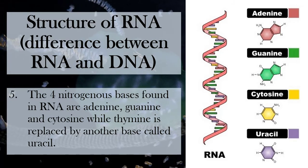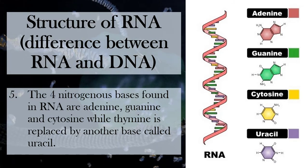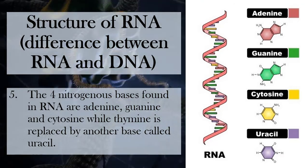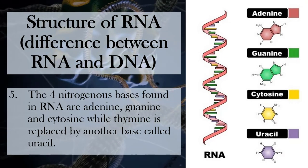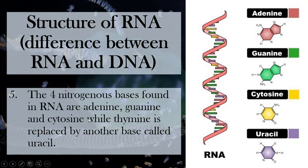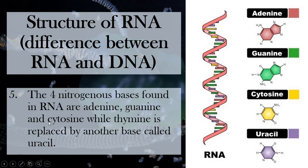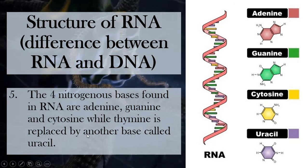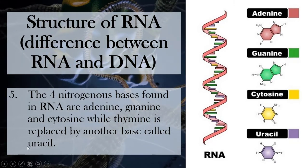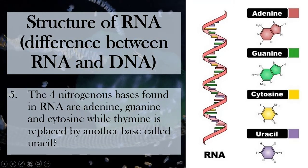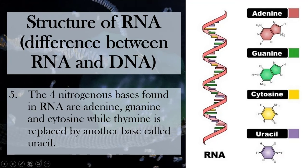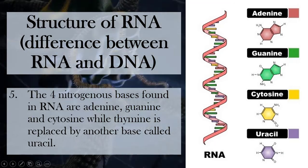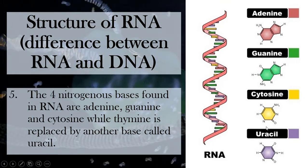Another difference between RNA and DNA is in the nitrogenous bases. There are 4 different nitrogenous bases in RNA. Adenine and guanine are purines and are present in both RNA and DNA. However, in the pyrimidines, the nitrogenous bases are different. RNA has uracil instead of thymine.